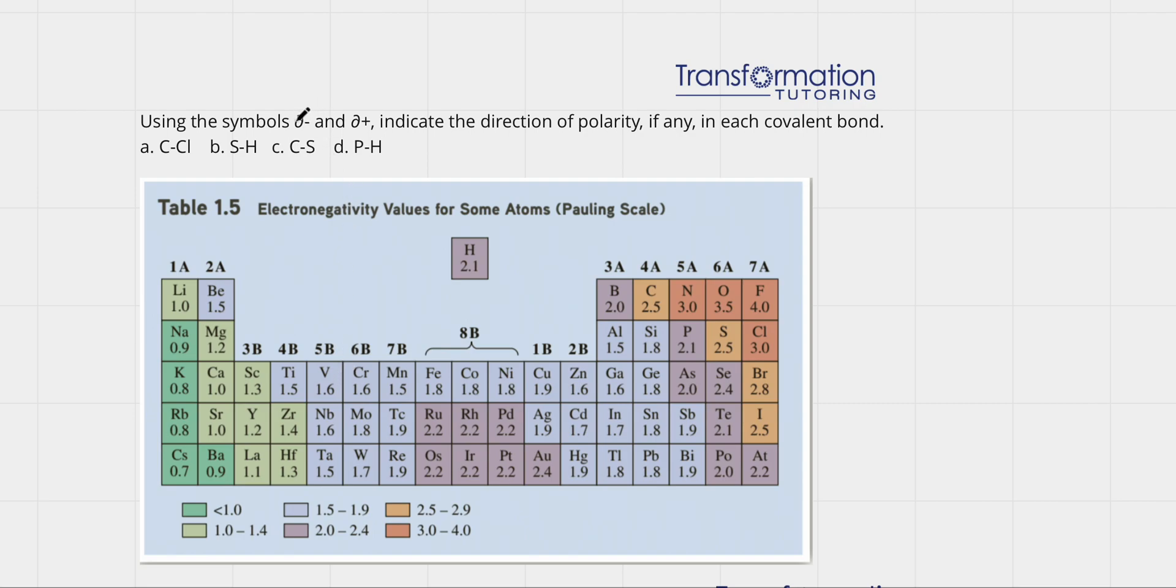And we have to understand what delta minus and delta plus mean. This means partially negative charge and this means partially positive charge. If two atoms share their electrons unequally where one atom pulls the electrons stronger than the other...